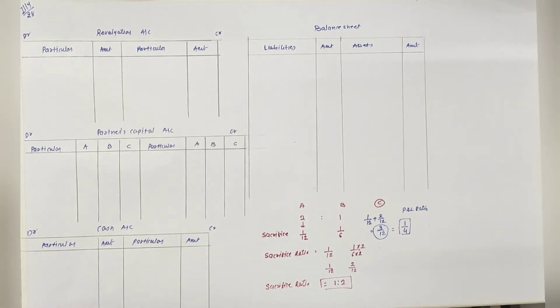Number 3: C will bring his share of goodwill in cash. C goodwill ला रहा है cash में. Goodwill is valued at Rs 1,80,000. तो goodwill की value भी यहाँ पर दी है - firm की goodwill कितनी है?